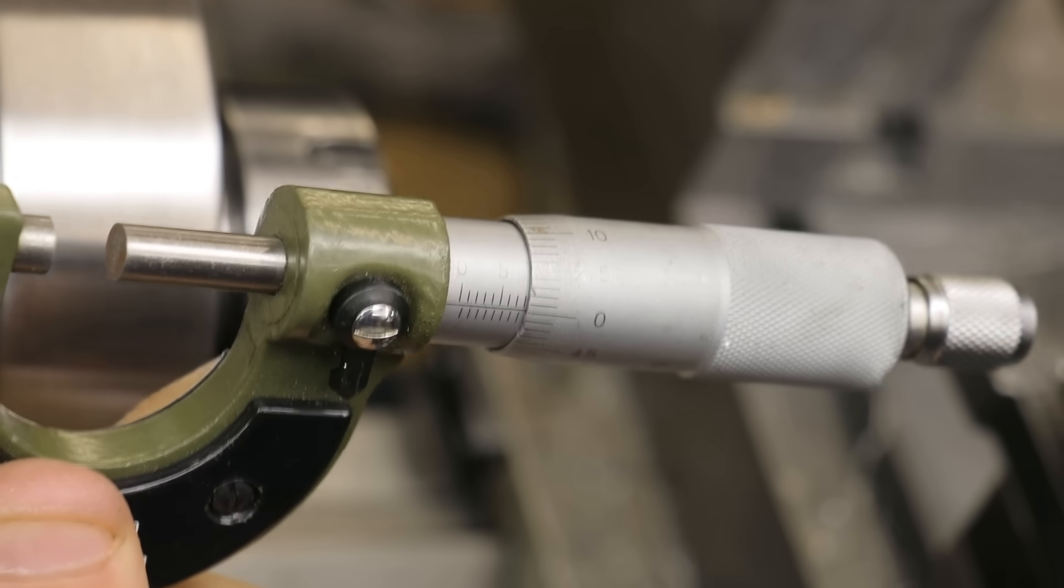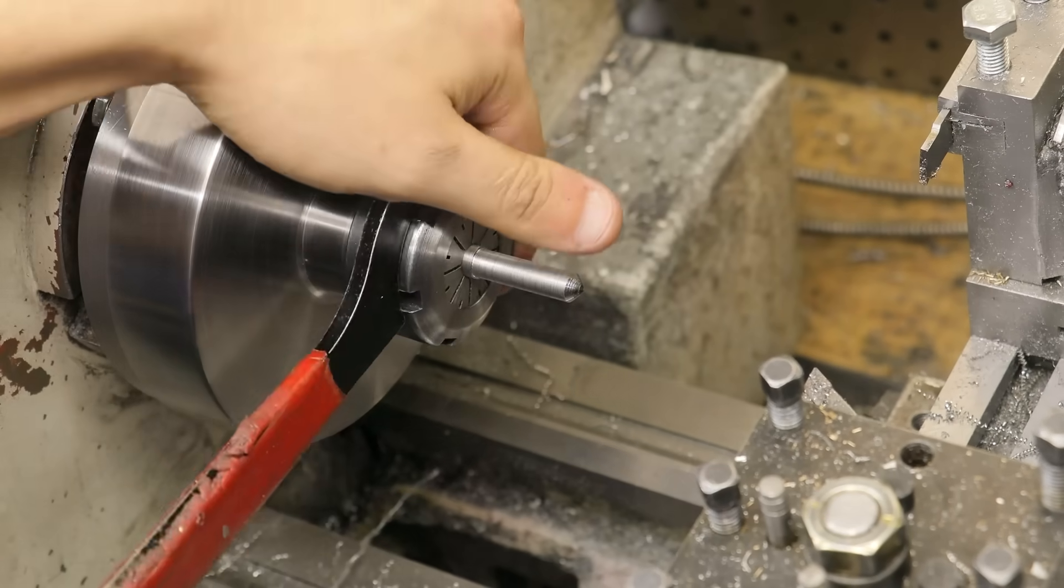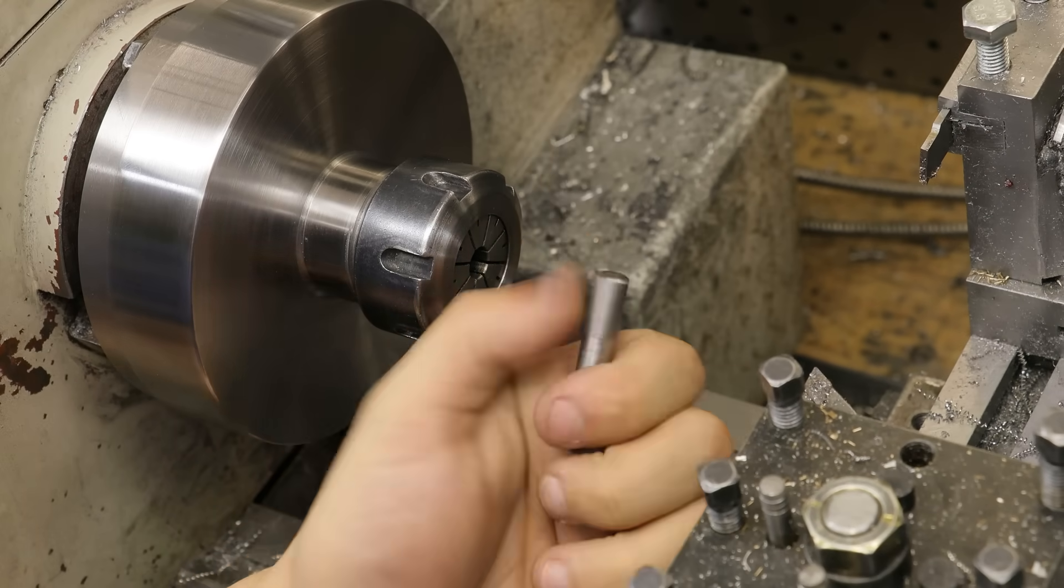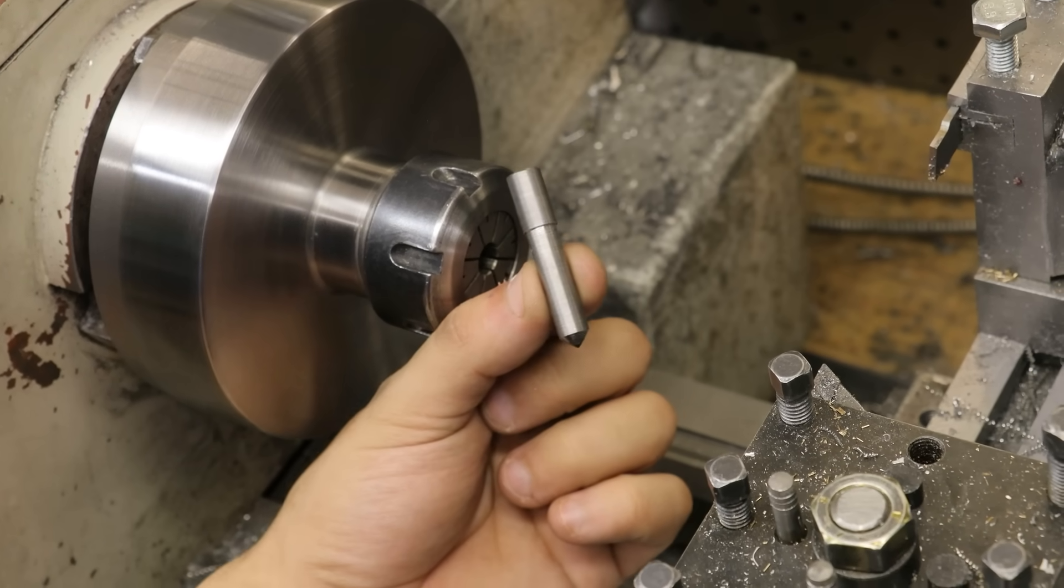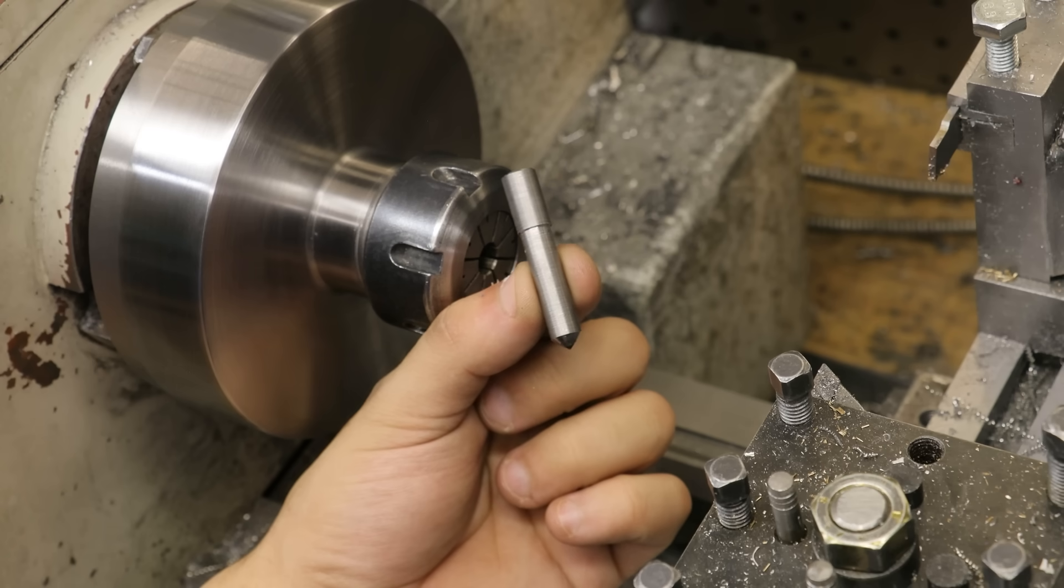And once again, that is almost spot on 8mm. And that is the cutter now done. I'm sure you can kind of see what I'm going for. All it really needs now is a holder and a spring.